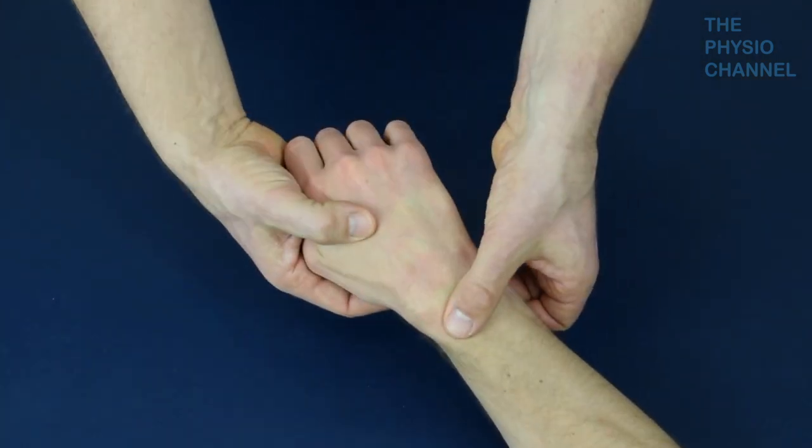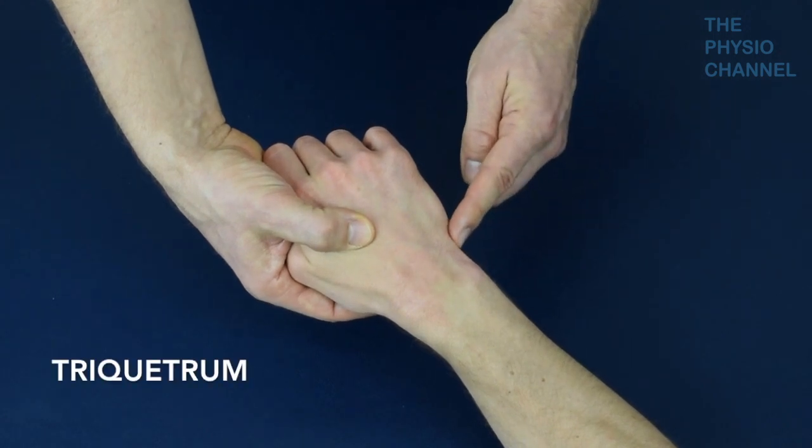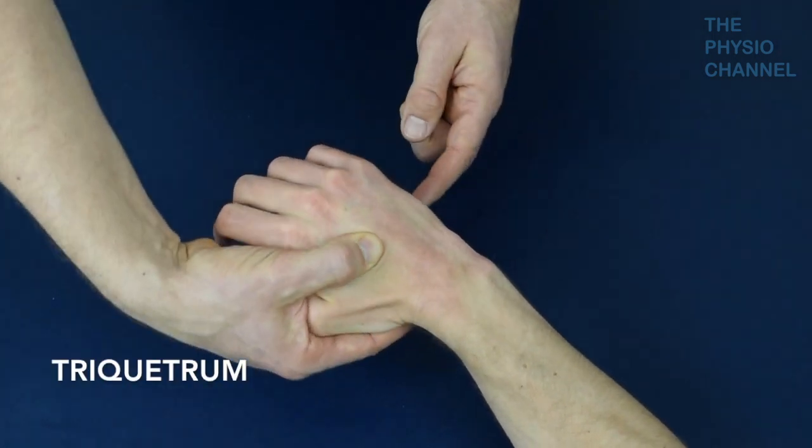Finally the triquetrum can be felt just distal to the ulnar styloid if you radially deviate the wrist.